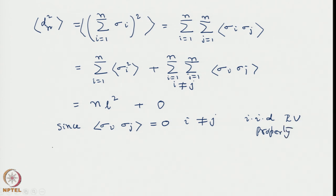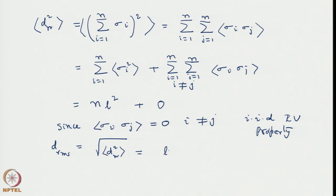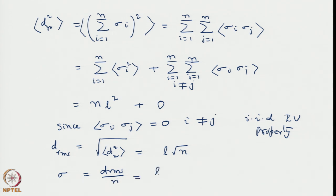Hence, the mean square displacement is n times L squared. If we define the root mean square distance from the origin in n steps as d_rms, which is the square root of the average of d_n squared, then d_rms equals L times the square root of n. Dividing by n for the mean, the standard deviation with respect to the mean distance for a given realization is d_rms divided by n, which gives L divided by the square root of n.